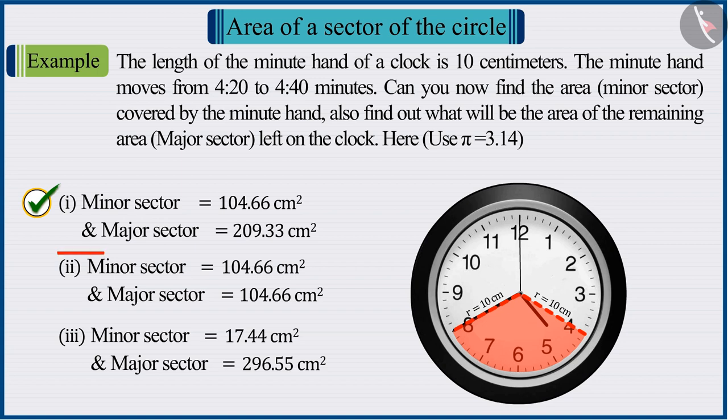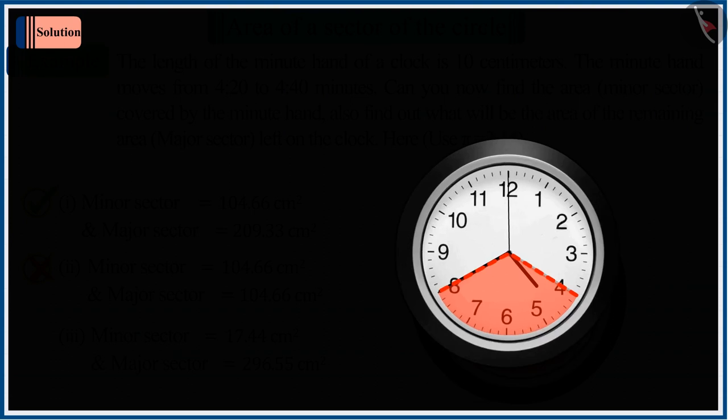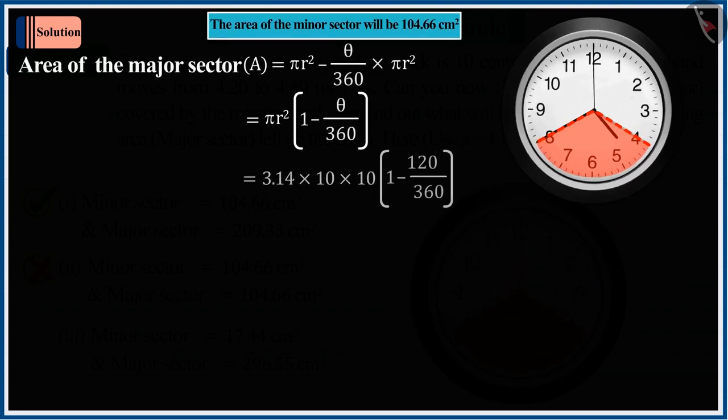If you have selected option 2, it is a good try. But that is the wrong answer. Because when you find the area of the major sector, that is A, then the value of theta is put as 240 degrees instead of 120 degrees.